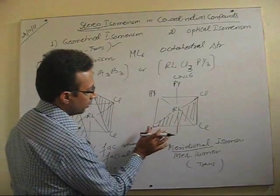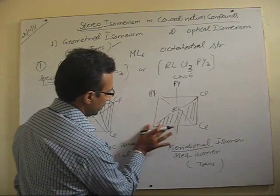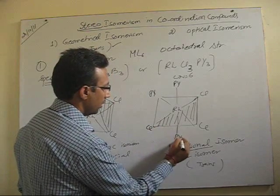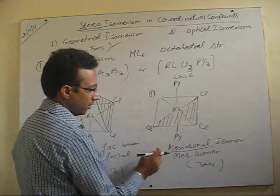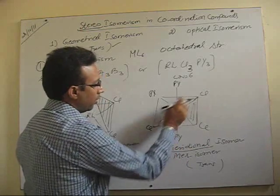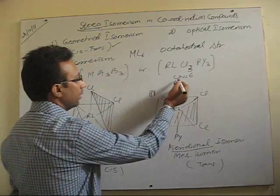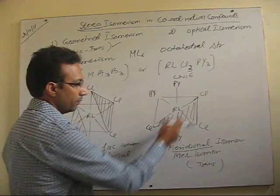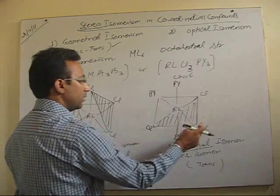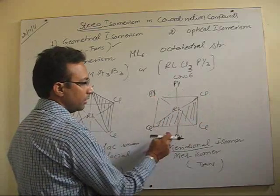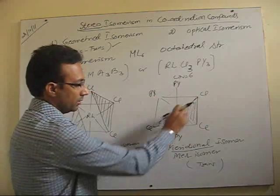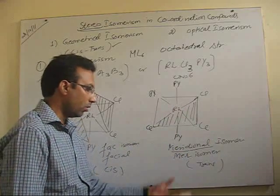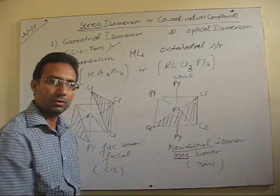The three chlorine atoms are present at the meridian of this octahedron while pyridine is present at the other positions left vacant. If three Cl or three pyridine are present at such positions, that is called a meridional isomer, or in short, a mer isomer.